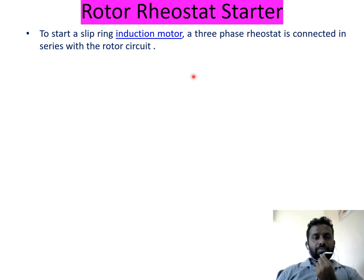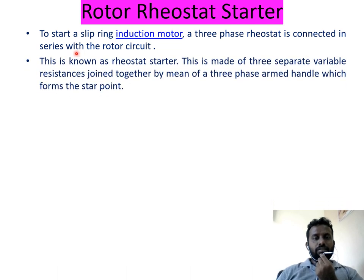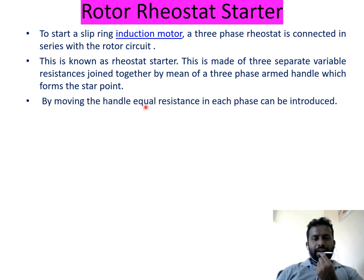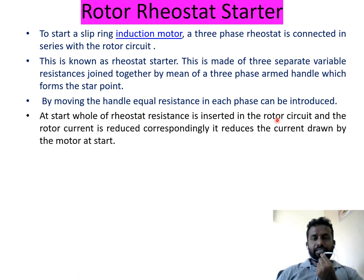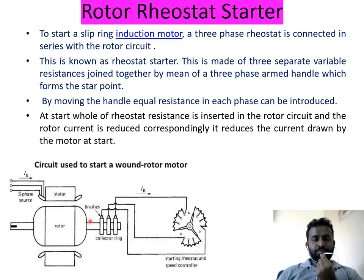Rotor Rheostat Starter: to start a slip ring induction motor, a three-phase rheostat — a variable resistor — is connected in series with the rotor circuit. This is known as the rheostat starter. It is made of three separate variable resistors joined by a three-phase armed handle which forms the star point. By moving the handle, equal resistance in each phase can be introduced. At start, the full rheostat resistance is inserted in the rotor circuit, reducing the rotor current and the current drawn by the motor at starting.